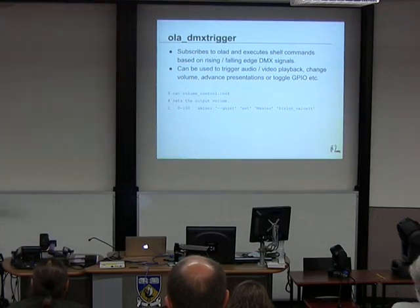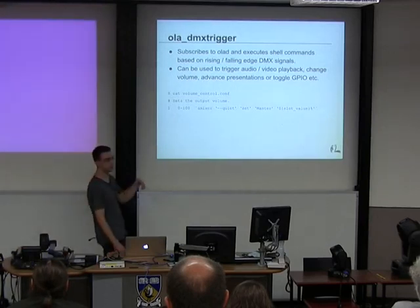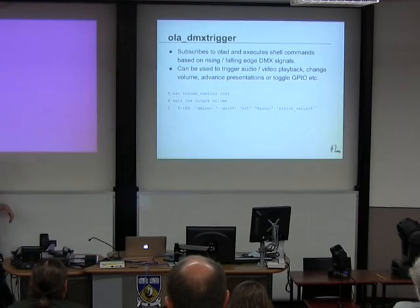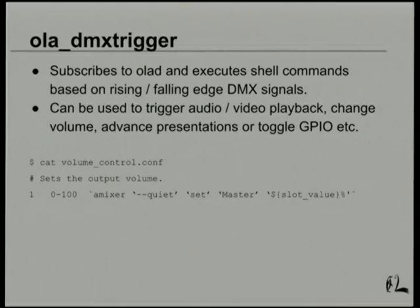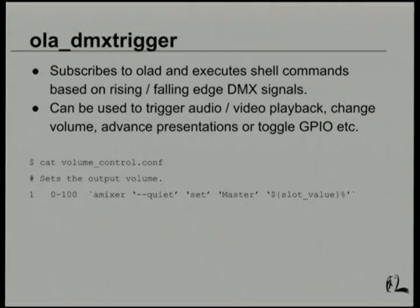We've seen how OLA can generate data and control lights. The other interesting part is receiving DMX data and using it to trigger things on stage. As part of the framework, there's a program called OLA-DMX-Trigger: you define a config file, and based on the DMX values received, it executes other programs. You can use this to toggle presentations, control GPIO pins on the Pi for solenoids or relays, or set volume playback on a Raspberry Pi. Many USB devices can be put into DMX receive mode and plugged into a daisy chain to receive DMX and toggle all sorts of behavior.